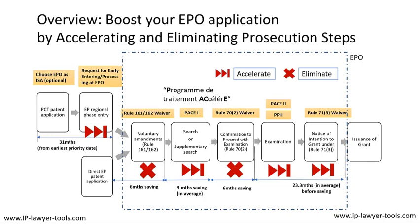If you take all these time savings together, the total time saving can be 38.3 months of an average prosecution time of about 50 months. Just to note, these were the figures for 2017 when I put this talk together. So from four years and something prosecution time, you can reduce to only about 12 months prosecution time. That comes close to the Track 1 prosecution route at the US Patent Office.